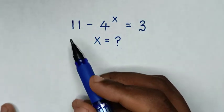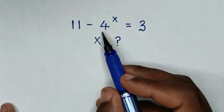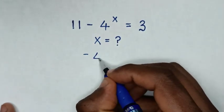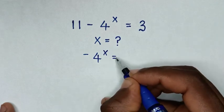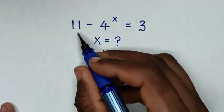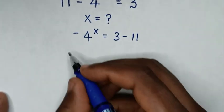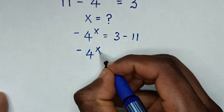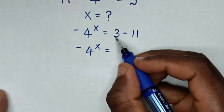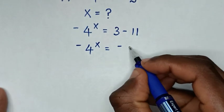So first we'll take this 11 into the right side, then it will be negative 4 power x is equal to 3 minus 11. Then it will be negative 4 power x is equal to 3 minus 11 is negative 8.